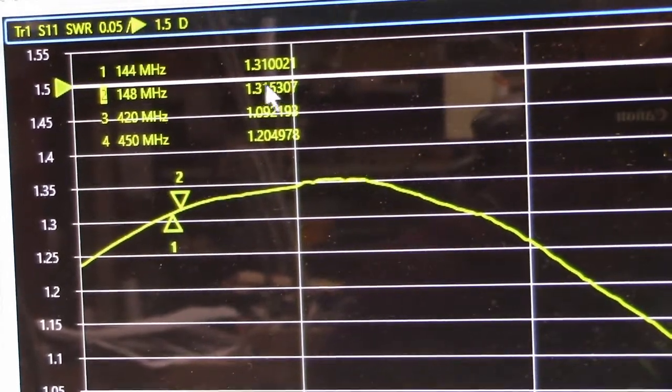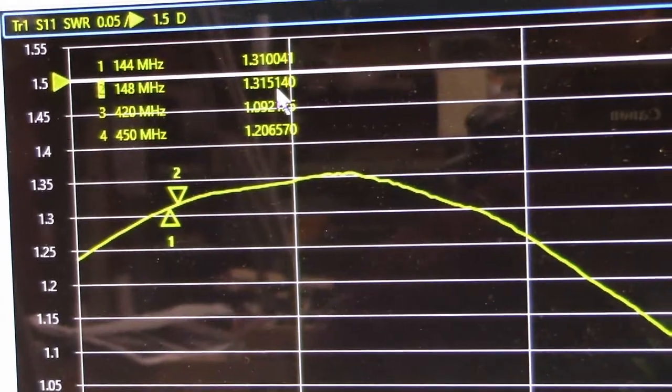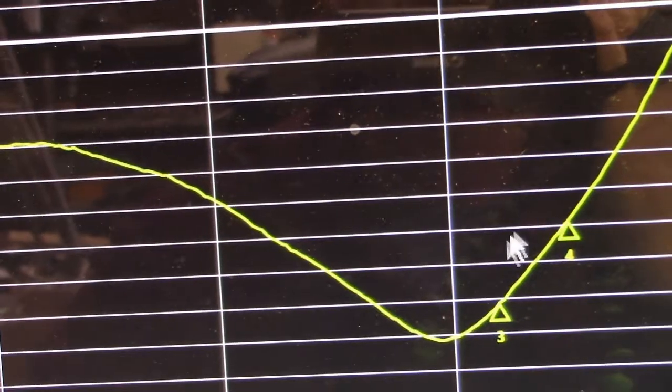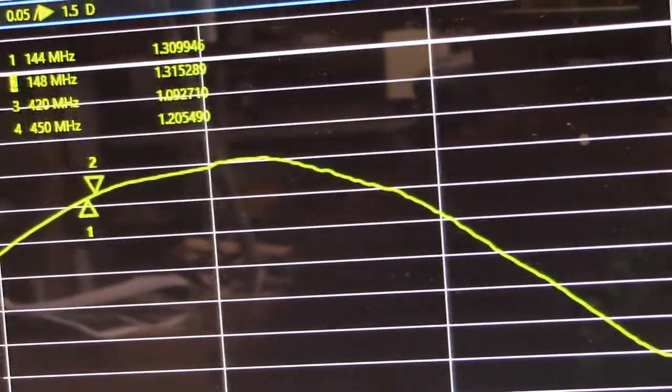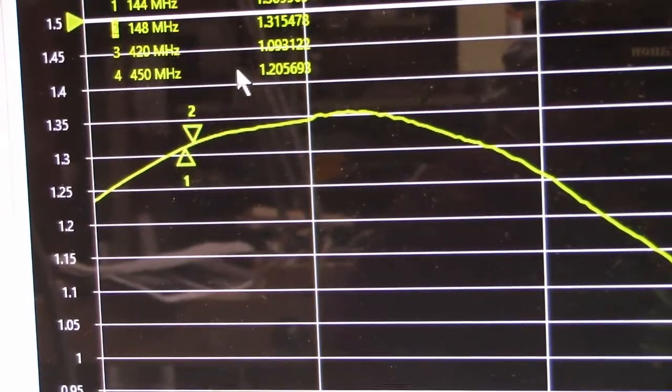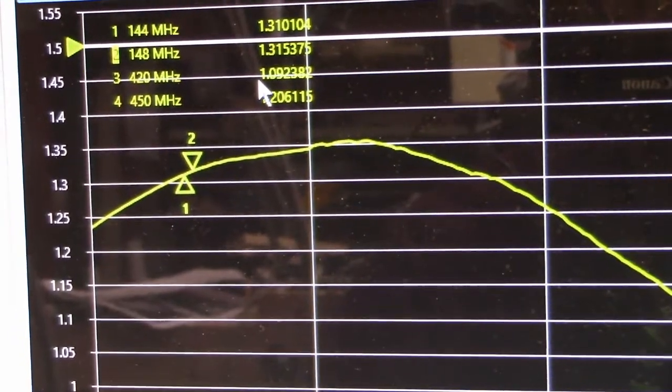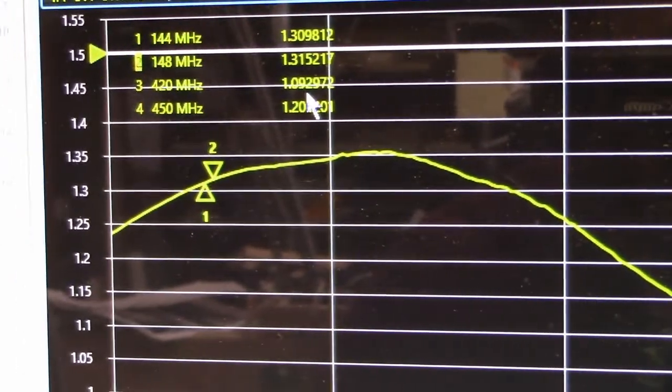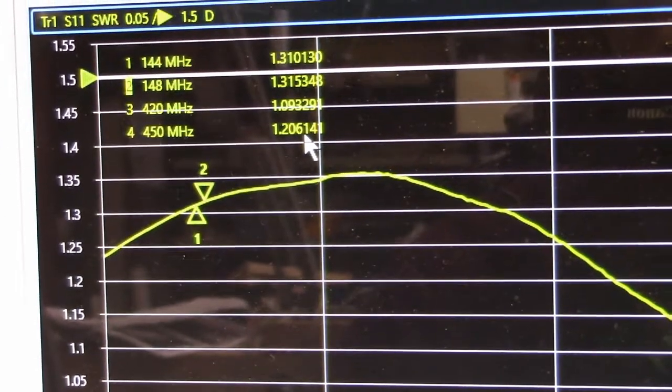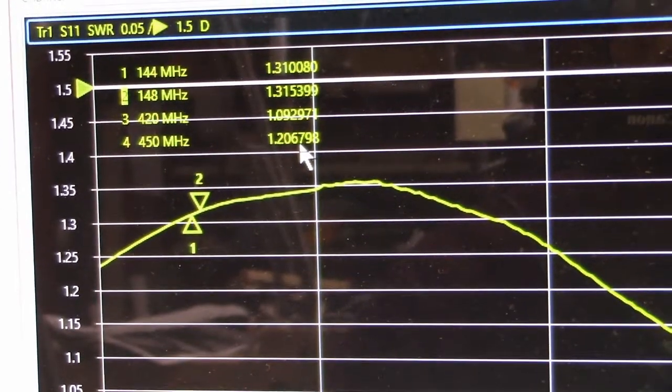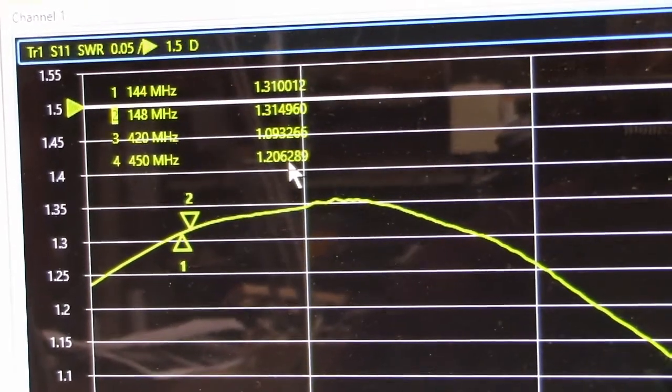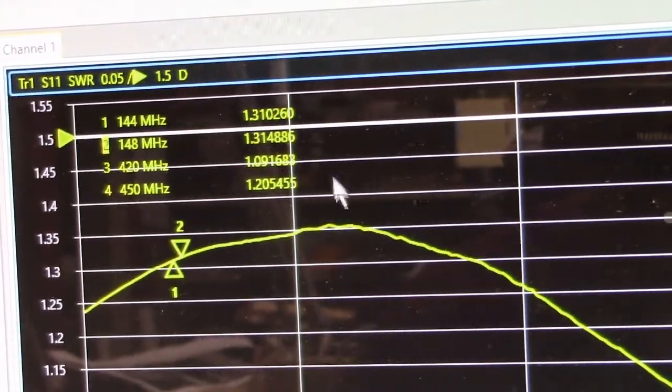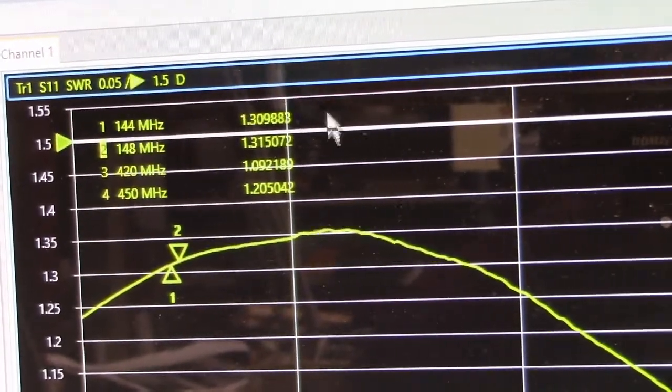The curve comes down, here's the 70 centimeter band over here. Notice my markers here, it's about 1.1 to 1 at the bottom end of the 70 centimeter band and about 1.2 to 1 at the top. This particular SWR bridge gives me better performance at the 70 centimeter band than on the two meter band.